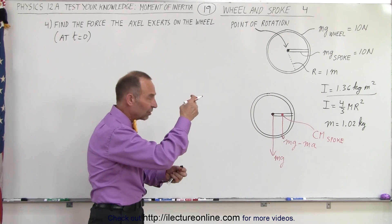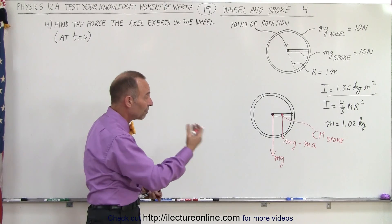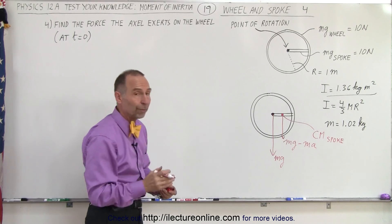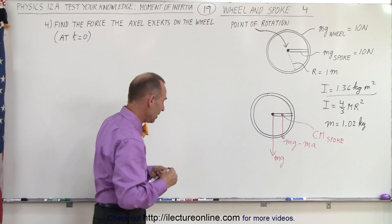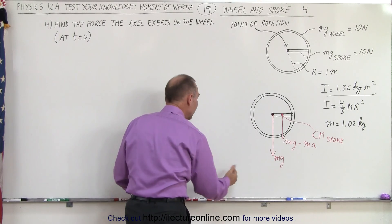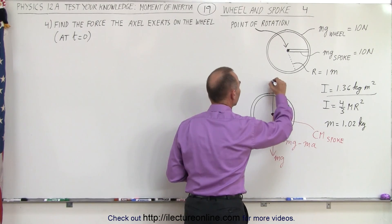When an object is attached to the string and the object is accelerating downward, the tension on the string is mg minus ma, so the force exerted by the spoke will be mg minus ma. And then we have the axle pushing back, so the axle will be pushing upward, and so let's call that the force of the axle.